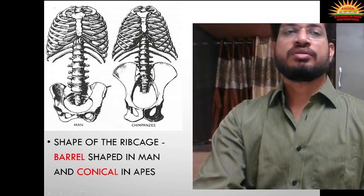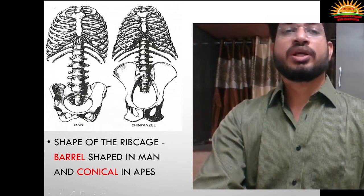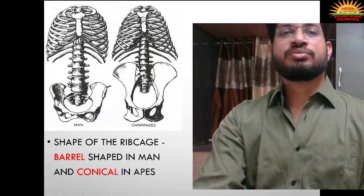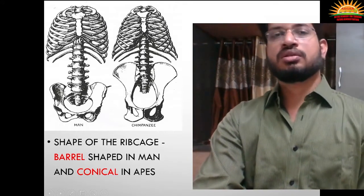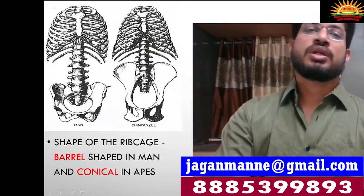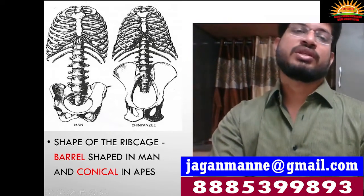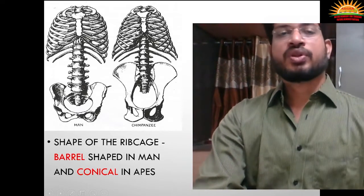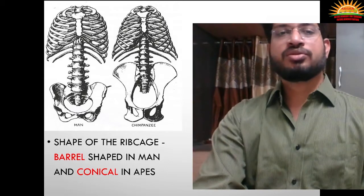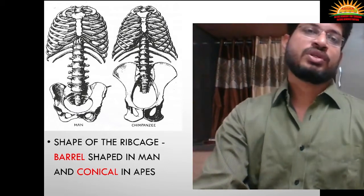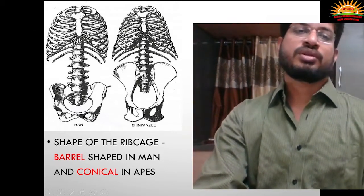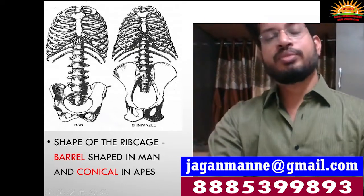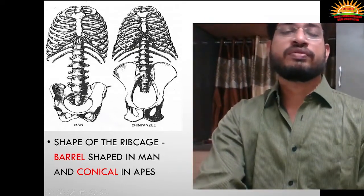The shape of the rib cage is another fundamental difference: in humans it is barrel-shaped, while in apes it is conical — an inverted cone-like structure. This is a prominent anatomical difference between apes and man.